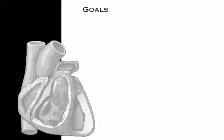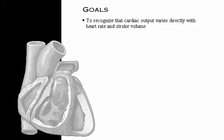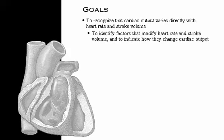Your goals for learning are to recognize that cardiac output varies directly with heart rate and stroke volume, to identify physiological factors that modify heart rate and stroke volume, and to indicate how these factors change cardiac output.